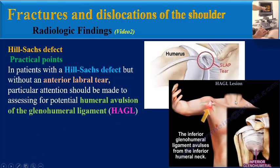In the Hagel lesion, the inferior glenohumeral ligament avulses from the inferior humeral neck, but the Hagel lesion itself needs a separate video for complete explanation.